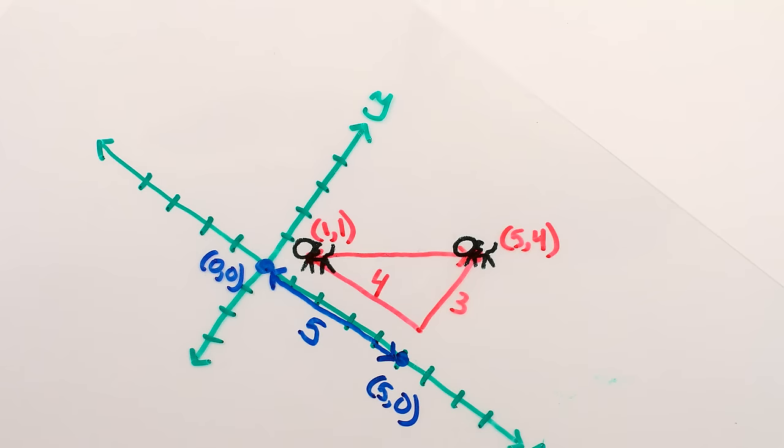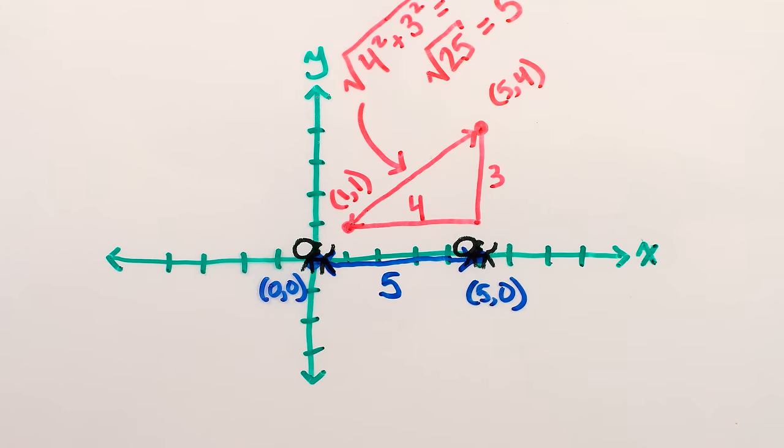But the overall distance between the cats, which we can find using the Pythagorean theorem, is the square root of four squared plus three squared, which is the square root of twenty-five, which is five, which is the same distance we calculated with the original axes.